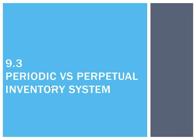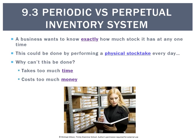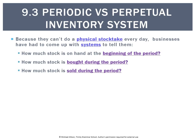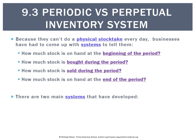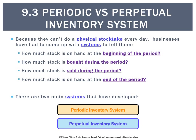In Year 12 Accounting we study what's called the perpetual inventory system, and we're going to learn about it by comparing it to another system called the periodic. A business always wants to know exactly how much stock it has at any one time, and the two systems we're going to look at are the periodic inventory system and the perpetual inventory system.